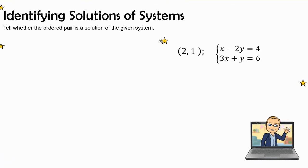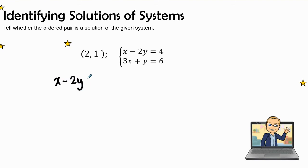I'm going to get rid of this graph for now, and we're going to pull in this system of these two equations. So in the first, it's asking us, the ordered pair (2,1), is it a solution to both of these equations? How I get started is, I'm going to rewrite both of the equations: x - 2y = 4, and 3x + y = 6.